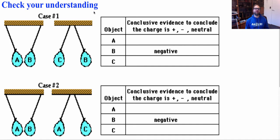I have two cases here. I have case one and case two. In case one, we have A and B attract and C and B repel. I want you, based on what we learned before, to see if you can figure out what is the charges on A and C given that B is negative.